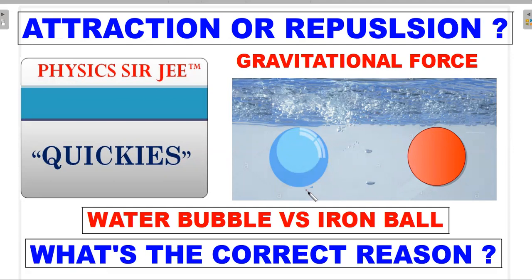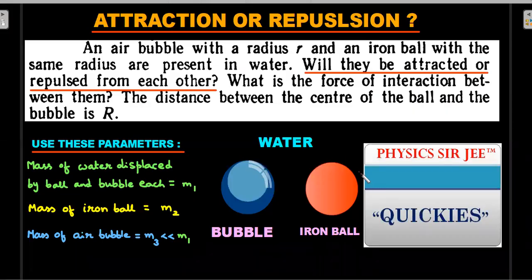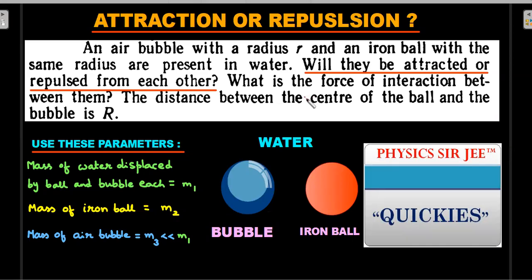Using these gravitational forces alone, you're supposed to calculate what is the net value of attraction or repulsion between the bubble and the iron ball. There are a lot of answers floating on the internet on this particular question which I'm not satisfied with, so we'll try to see the correct reasoning and a smart way of calculating the answer.